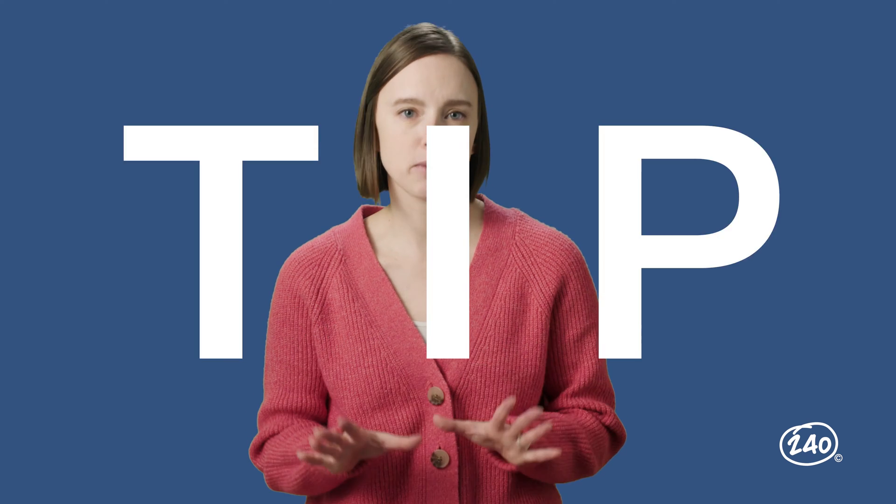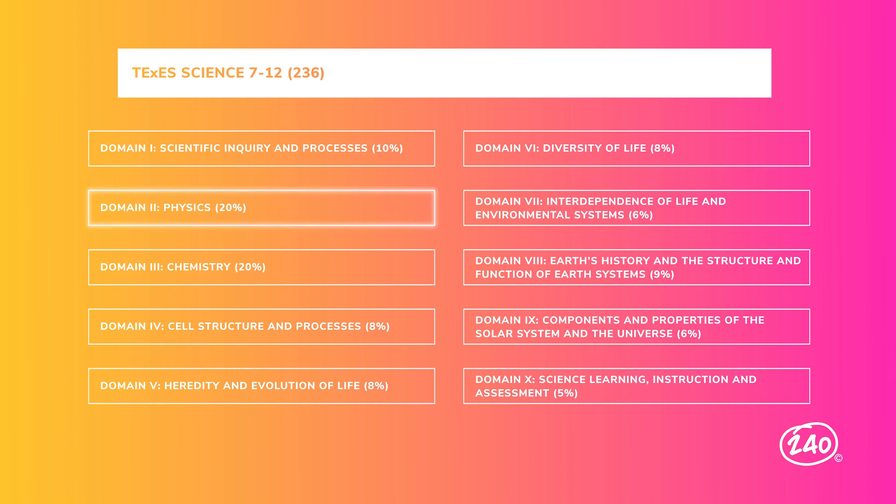So let's recap. Independent variables are manipulated. Dependent variables are measured to see any effect from the independent variable. And controls remain the same. Now let's get physical in domain two, physics.